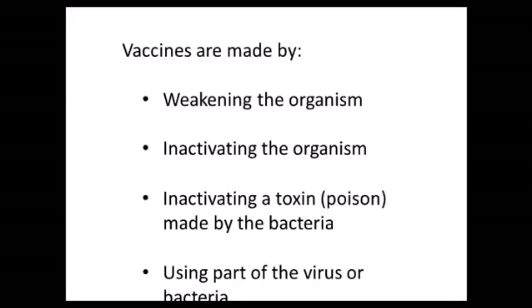However, antigenic properties will still be retained. The third way vaccines can be prepared is by inactivating a toxin. A toxin is a poison produced by the bacteria, and by inactivating this toxin we can produce what we call a toxoid. This toxoid can provide protection against the toxin if the person is exposed to it in future. Lastly, a very commonly used method these days is using a part of the virus or the bacterium — such as the cell wall or the capsule — to produce a vaccine.